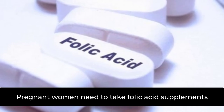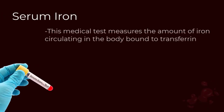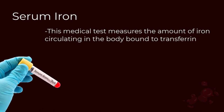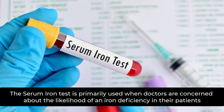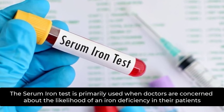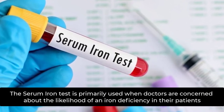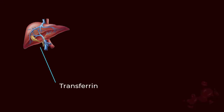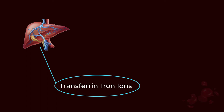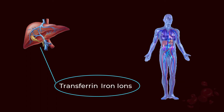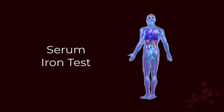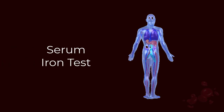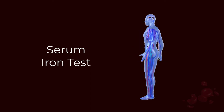Pregnant women need to take folic acid supplements. The serum iron test measures the amount of iron circulating in the body bound to transferrin. It is primarily used when doctors are concerned about the likelihood of iron deficiency in their patients. The liver produces transferrin, which binds with iron ions. The serum iron test uses blood drawn from the veins to measure the iron attached to transferrin and circulating in the body.